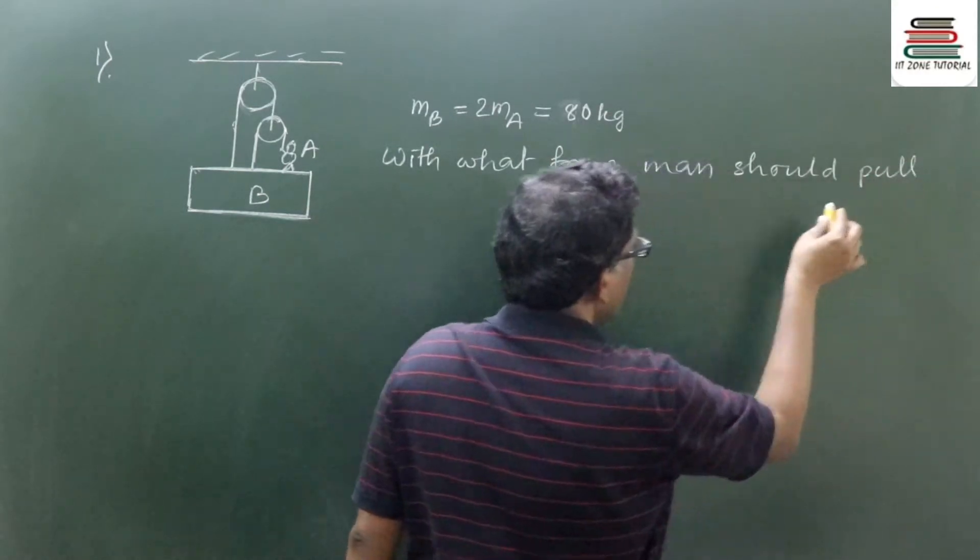For the free body diagram of block B, its weight is 80g acting downward. Weight of the man is 40g acting downward. We consider the contact force N, then tension force T, and another force 2T. If T is the tension in one part of the rope, then the other part has 2T.